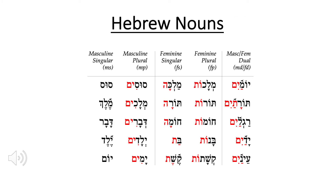The direct object marker is typically aleph-tav with an E-class vowel, either tsere or segol. However, when added to a pronoun, the aleph will take an O-class vowel, either a holam or a holam-vav. Hebrew nouns are either masculine or feminine, singular, plural, or dual. You can see the endings here: nothing in the masculine singular, hiriq-yod-mem in the masculine plural, qamets-he or perhaps a patach or segol-tav in the feminine singular, -ot in the feminine plural, and -ayim or -atayim in the dual.